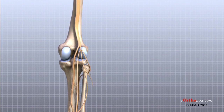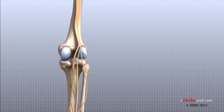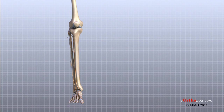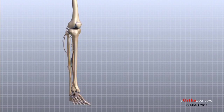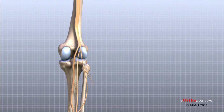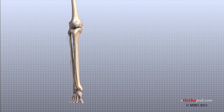The most important nerves around the knee are the tibial nerve and the common peroneal nerve in the back of the knee. These two nerves travel to the lower leg and foot, supplying sensation and muscle control. The large sciatic nerve splits just above the knee to form the tibial nerve and the common peroneal nerve. The tibial nerve continues down the back of the leg, while the common peroneal nerve travels around the outside of the knee and down the front of the leg to the foot. Both of these nerves can be damaged by injuries around the knee.